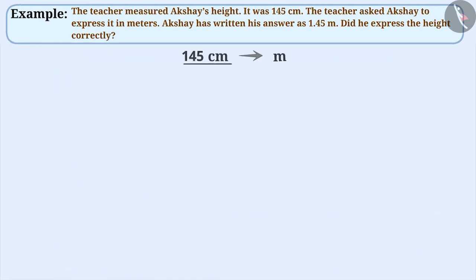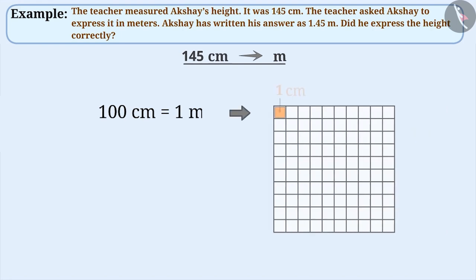Let us express 145 centimeters in meters. We already know that 100 centimeters is equal to 1 meter. That means 1 centimeter is 1 part and there will be 100 parts like this in 1 meter.